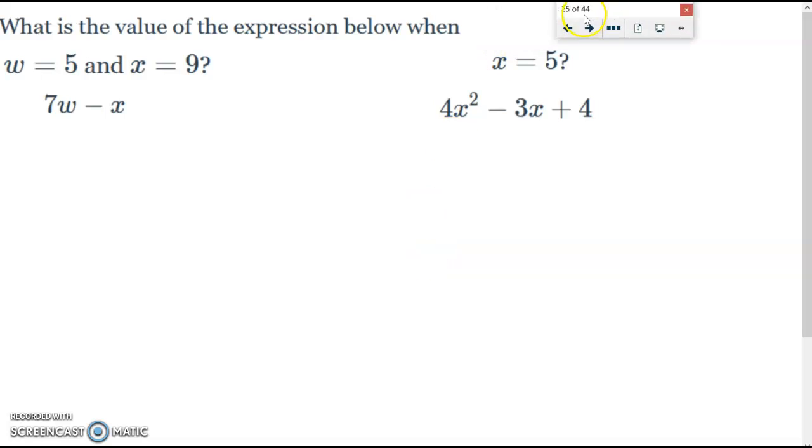All right. So here, it says what's the value of the expression below when the variable W is 5 and the variable X equals 9? We're going to take the 5 and the 9 and plug those values in. So I'm going to replace the W and the X. So here, with the W, this is 7 times W. So I'm plugging in 5 and putting in parentheses to show you that it's multiplication. So it's 7 times 5. And here, I'm just going to put my 9 here.